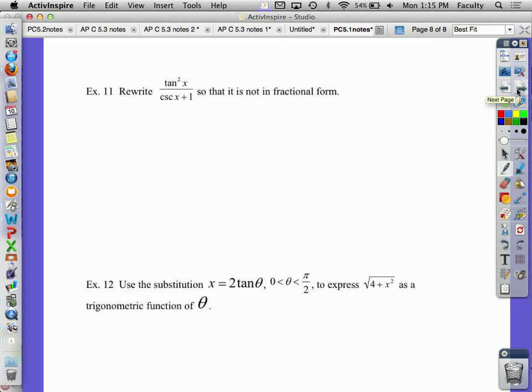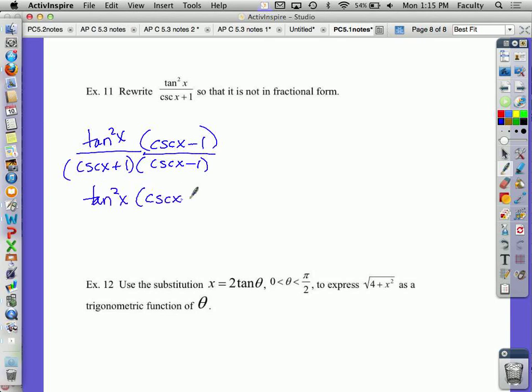Example 11. Rewrite tangent squared x over cosecant x plus 1 so that it's not in fractional form. So this is the same type. We're going to multiply by the conjugate, which would be cosecant x minus 1 over cosecant x minus 1. Remember, you want to leave the numerator in a factored form because the goal is to try to reduce it if we could.